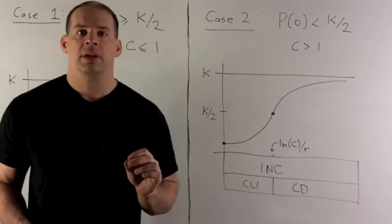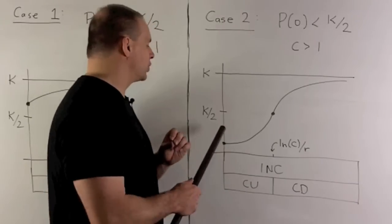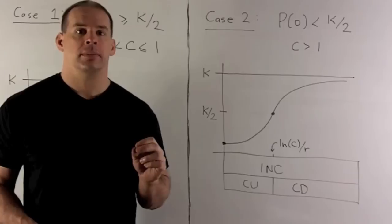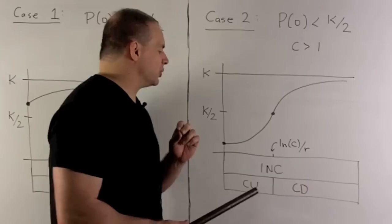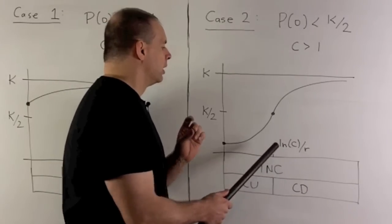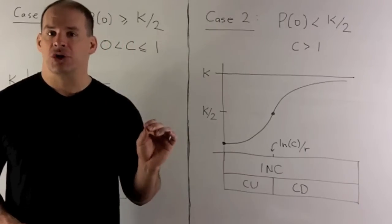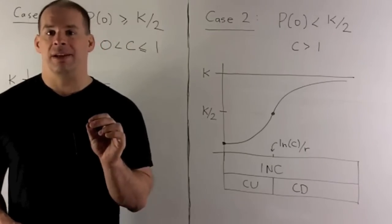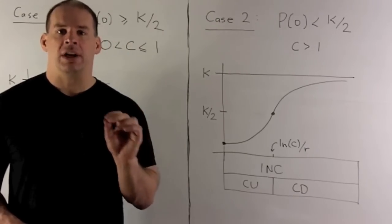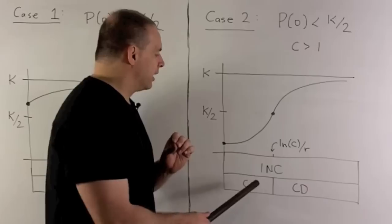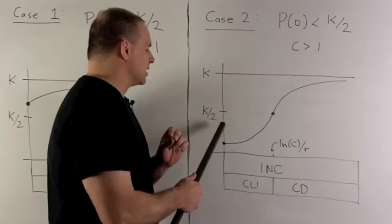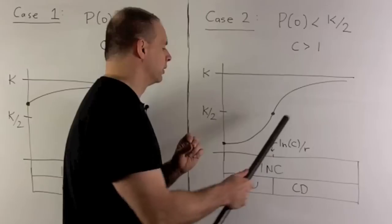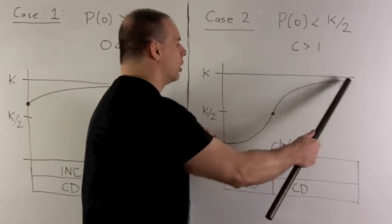In the second case, the initial population is less than K over 2, meaning C is greater than 1. Here we have an inflection point at t equals natural log of C over R, and at that point the value of the function is K over 2. We're increasing everywhere, concave up below K over 2 and concave down above K over 2. When we put that together, we get our S-curve.